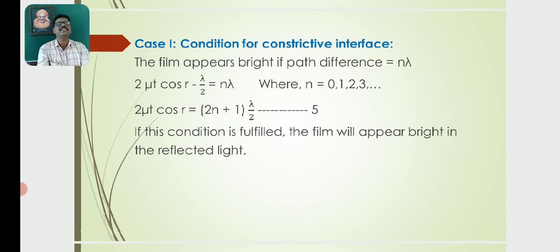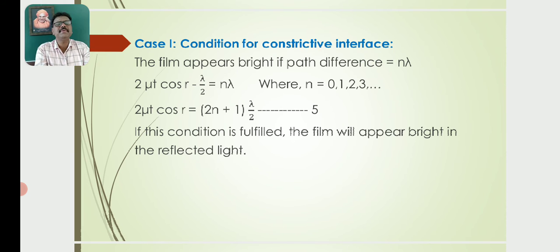Condition for constructive interference: The film appears bright if the path difference equals nλ. So: 2μT cos R − λ/2 = nλ, where n = 0, 1, 2, 3, ... This gives 2μT cos R = (2n + 1)λ/2. This is equation (5).